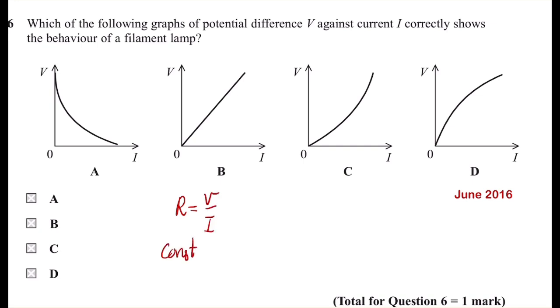...according to this relation, it's going to be a straight line in the case of having a resistor. For Ohm's law, one of the requirements is when the temperature is constant. Unfortunately, in the filament lamp...